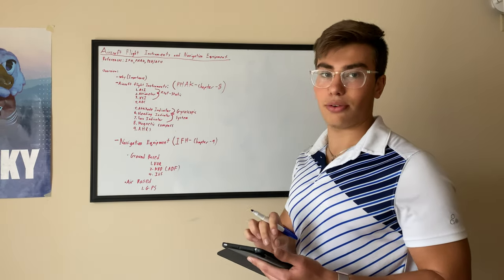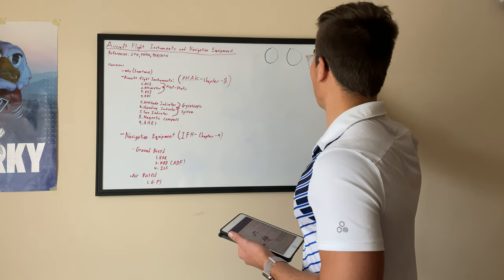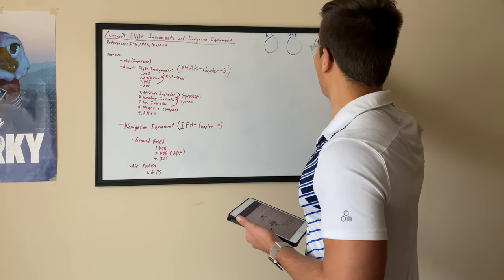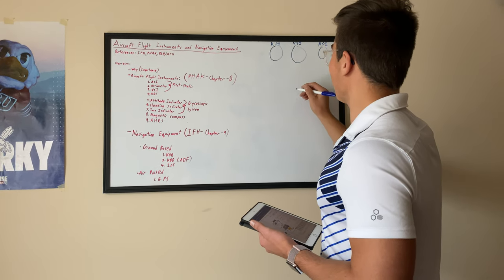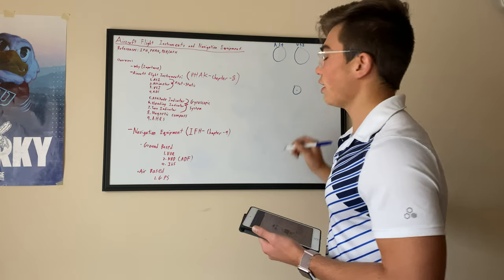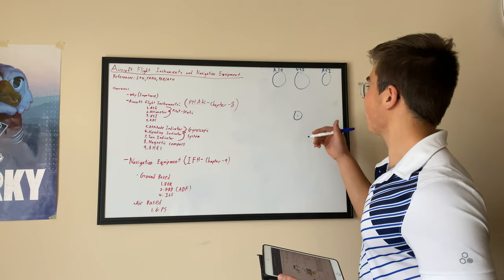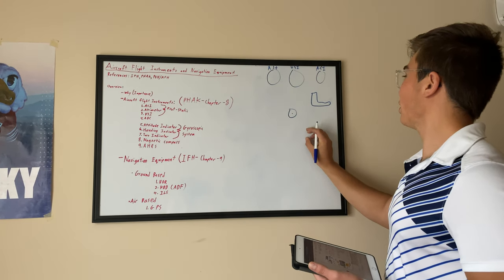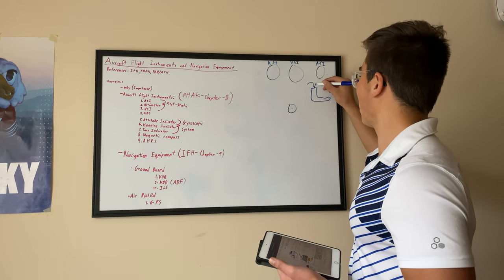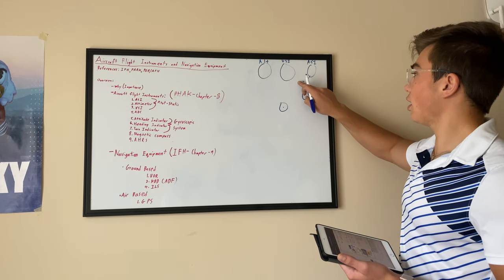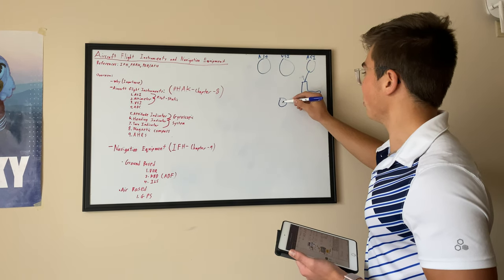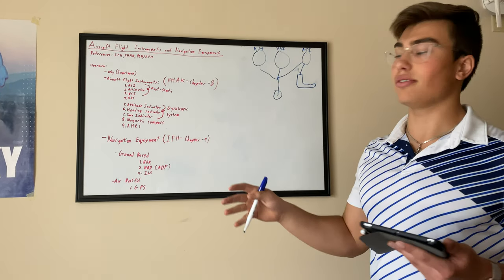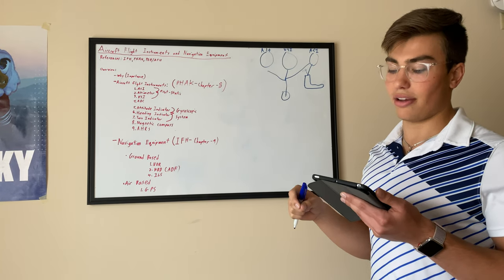First we're going to go through the pitot-static system. We have our altimeter, our VSI — vertical speed indicator — and our airspeed indicator. Each of these are connected to the static port, which on our Cessna you can see right on the side of the plane. We have our pitot tube, which has a hole here and a little drain hole in the back. The pitot tube simply goes to our airspeed indicator and doesn't go anywhere else. The static port goes to our airspeed indicator, our VSI, and our altimeter. The very basics of all pitot-static systems: indications are derived by pressure differentials.